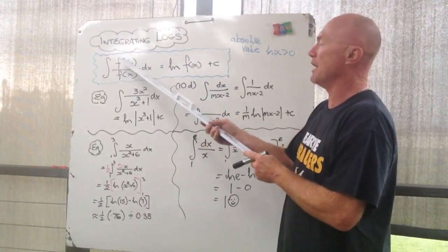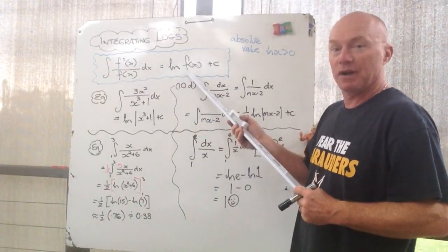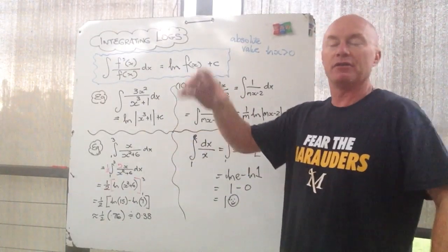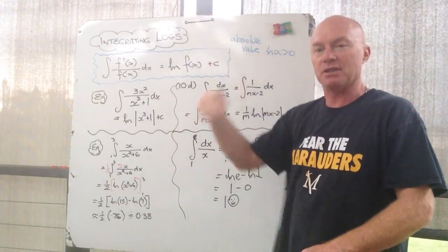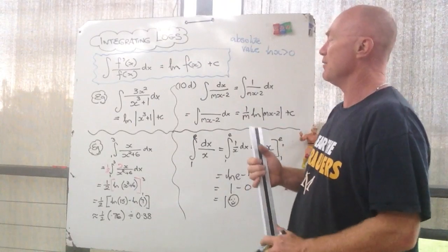If you've got something of the form function dash x on function x, then when you integrate it, it goes to log of function x. Remember, we did the derivative of log of function x, which becomes function dash x on function x. So they are pigeon pair, the inverse of each other.